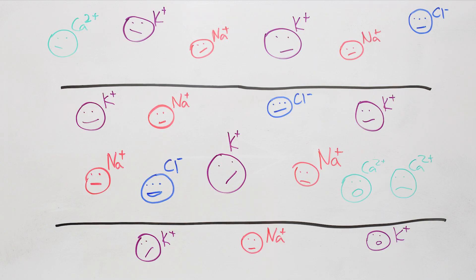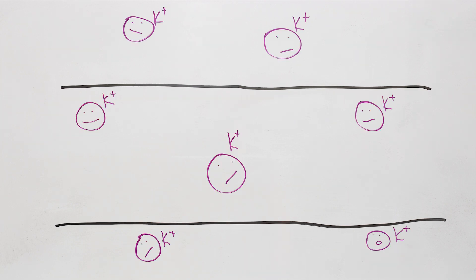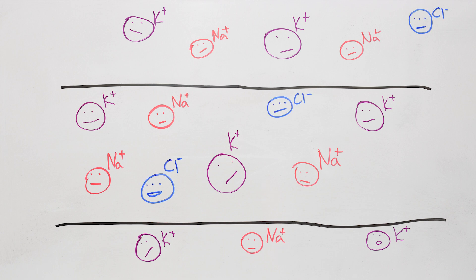It turns out that in the fluid inside and outside the cell, there are a lot of ions, little charged particles. There are potassium ions, sodium ions, chlorine ions, calcium ions, and others.